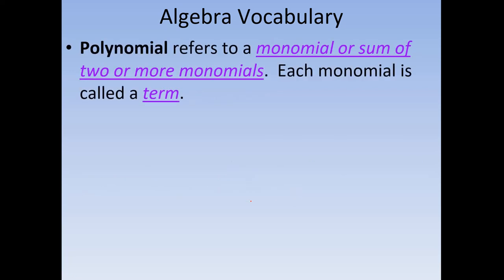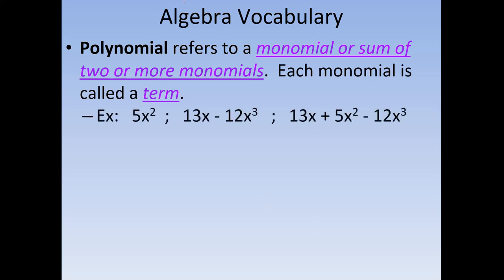We can use a more umbrella term: polynomial. It's usually referring to any number of monomials — this could be one monomial, or two, three, four, it doesn't matter. The big thing, though, is that each monomial is going to be called a term. Going back to our examples, these are all polynomials. This has a single-term polynomial, this would be a two-term polynomial, and this would be a three-term polynomial.